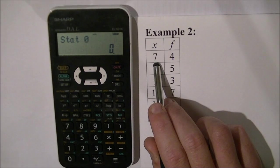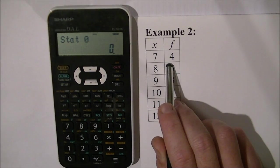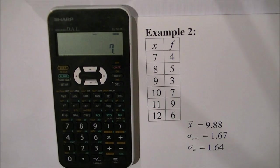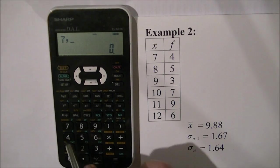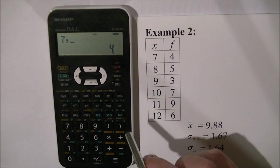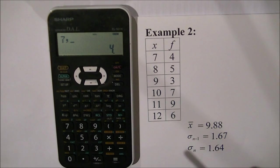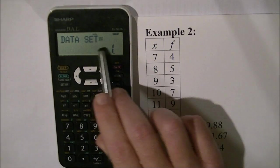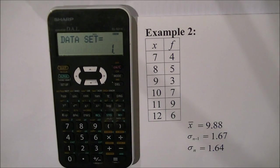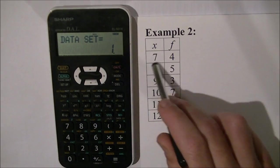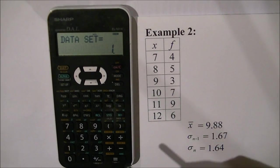To enter the number 7 four times I press 7 and then STO and a little comma comes up. I press the number 4 and that tells the calculator to remember the number 7 is included 4 times in this data set. I press M plus. It says data set equals 1, which means I have entered one score type.